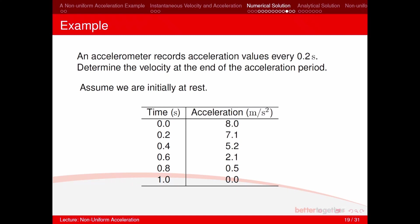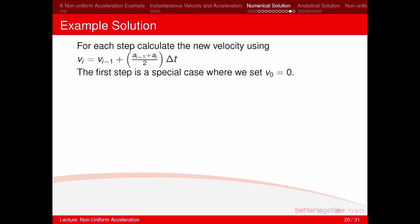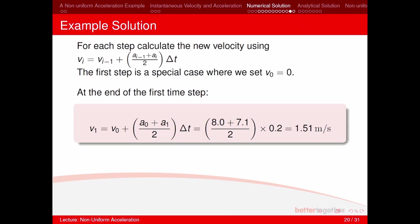Let's look at a worked example using numerical methods to approximate velocity. A table gives accelerometer values recorded every 0.2 seconds, and we need to determine the velocity at the end of the acceleration period. Assuming we start from rest, v_0 = 0. At time step 1: v_1 = 0 + ((8 + 7.1) / 2) × 0.2 = 1.51 m/s.